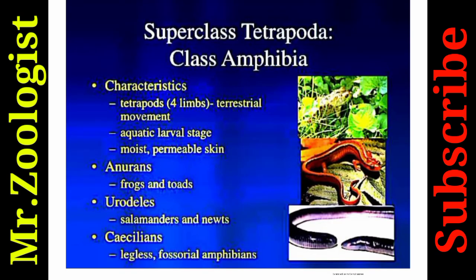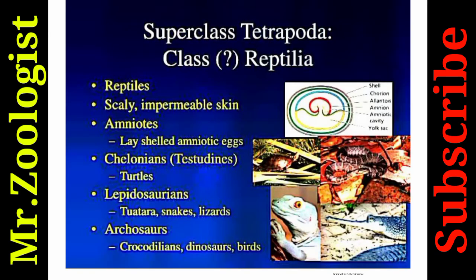Superclass Tetrapoda — Class Amphibia: characteristics include four limbs, terrestrial movement, an aquatic larval stage, and moist permeable skin. Orders include Anura (frogs and toads), Urodela (salamanders and newts), and Caecilia (legless amphibians).